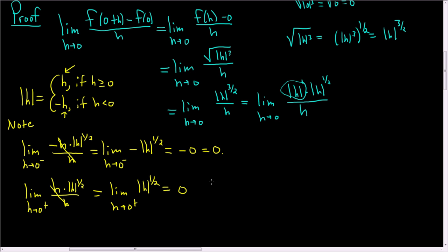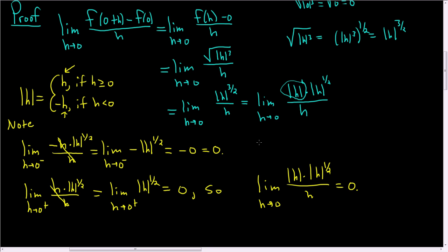So we get 0 in any case. The limit as h approaches 0 of the absolute value of h times the absolute value of h to the 1 half, all divided by h, is equal to 0. So the limit exists, and our function is differentiable at 0.